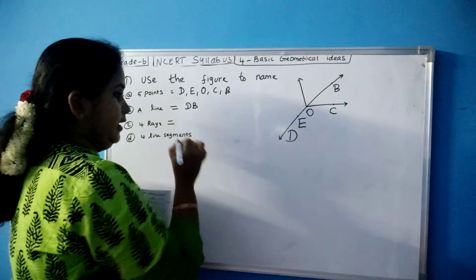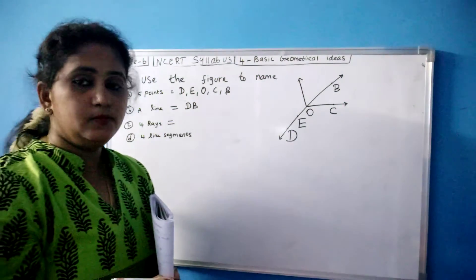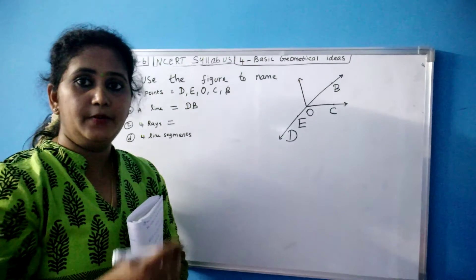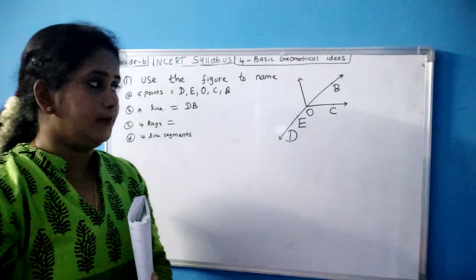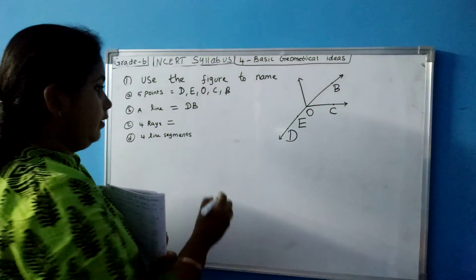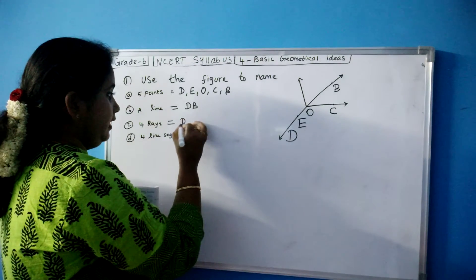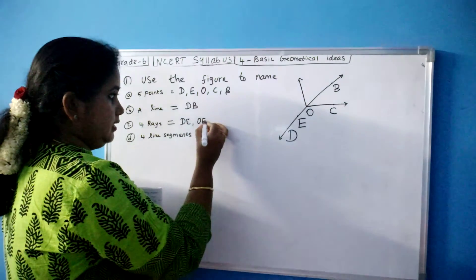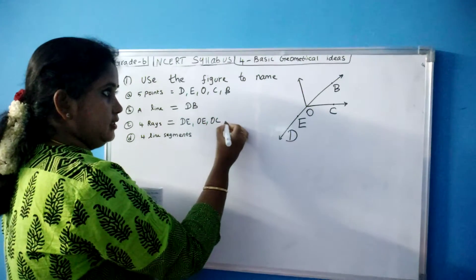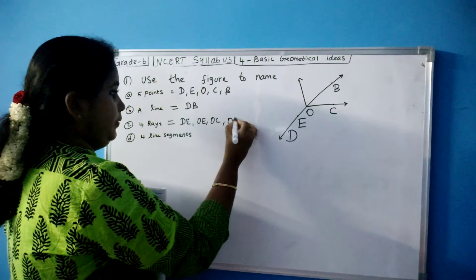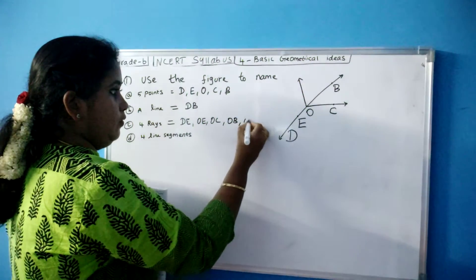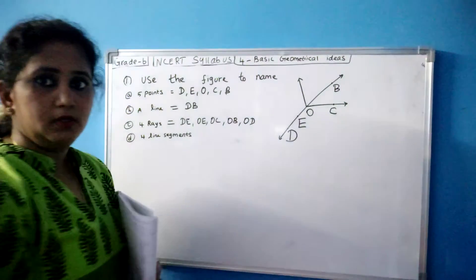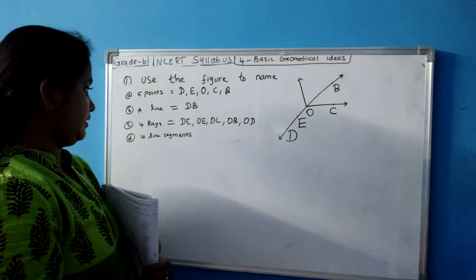Then 4 rays. What do you mean by rays? It has one starting point and there is no end point. It goes on endlessly. So what are the 4 rays? DE is a ray, then OE is a ray, OC is a ray, OB is a ray, then OD is a ray. I wrote 5 rays.